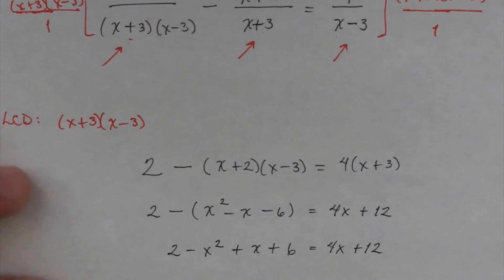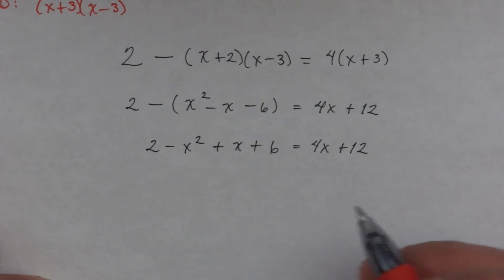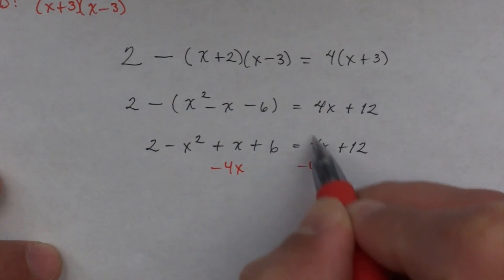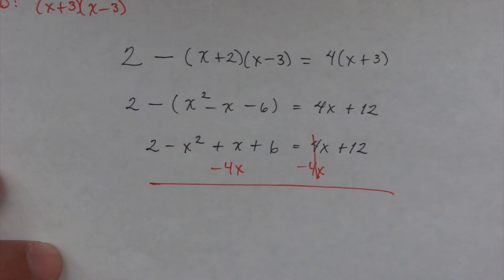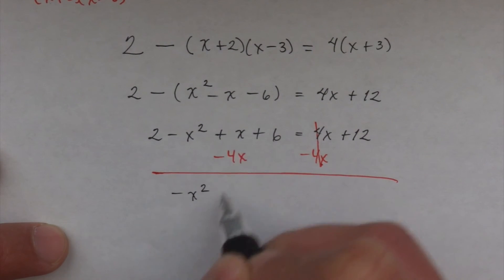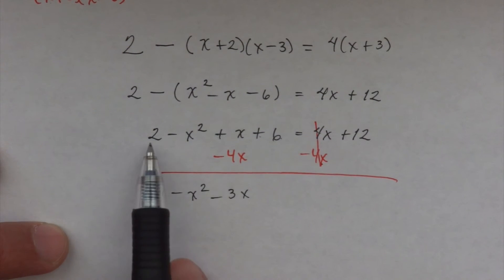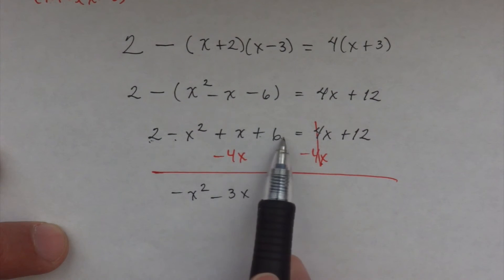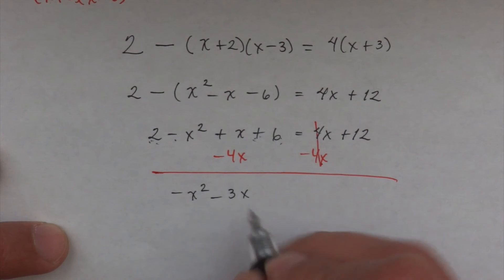We want to go ahead and combine like terms. So just bring the -4x over here. That simplifies, and I'm just going to do that first, combine. So I'm going to have a -x² - 3x. Two plus six. Now remember, look, this is a two, not a negative. Students get confused. What's in front of the six? It's a plus. So it's two plus six. That's going to give me eight equals 12.